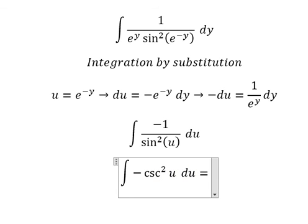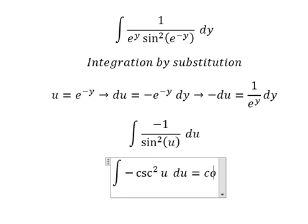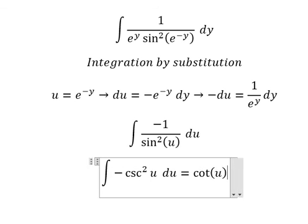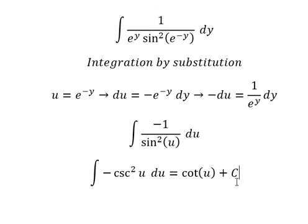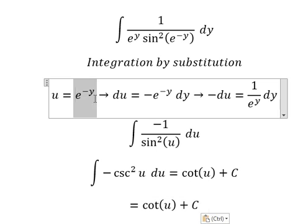The integration of cosecant squared u is cotangent u, and I will add the constant C. So u equals e to the power of negative y.